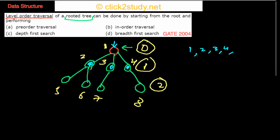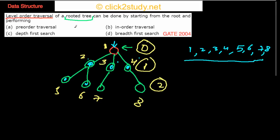Once that's done, you do the same thing for node two, then for three, and then for four. Coming to two, the adjacent nodes are five and six, so you write five and six. Then for three there is seven, and for four there is eight. That's what you do in breadth first search, and that's why it is the same as level order traversal — because you are going level by level.